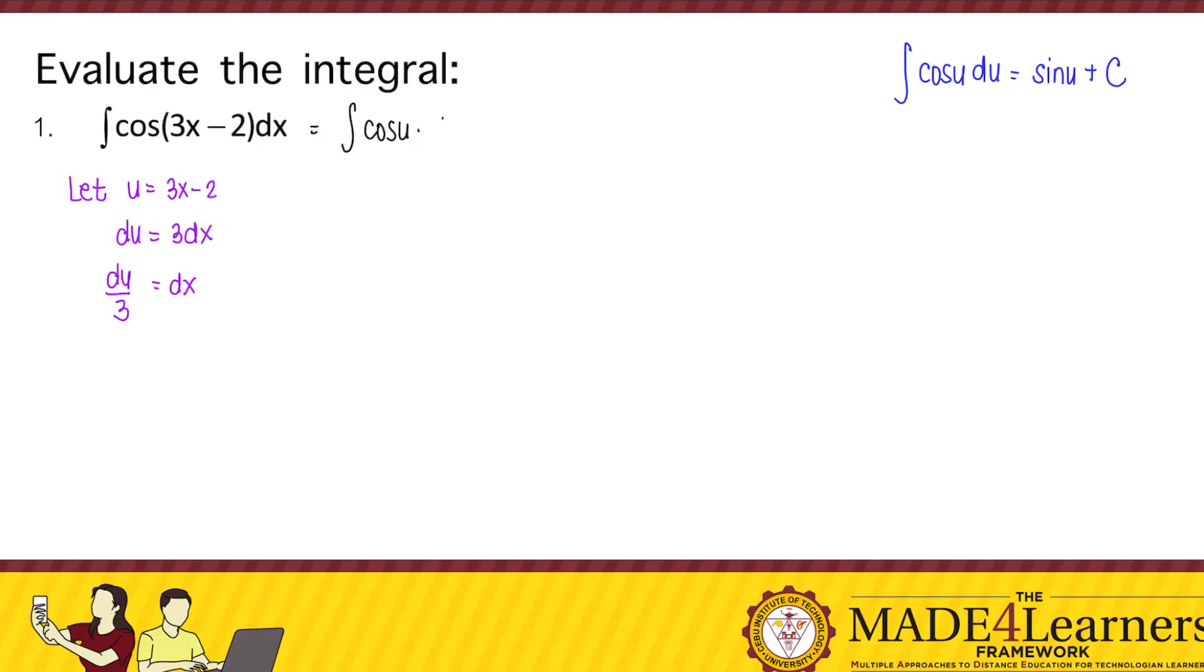We substitute it to our given, that's cosine of u du over 3. We put the constant outside, that's one-third integral of cosine of u du.